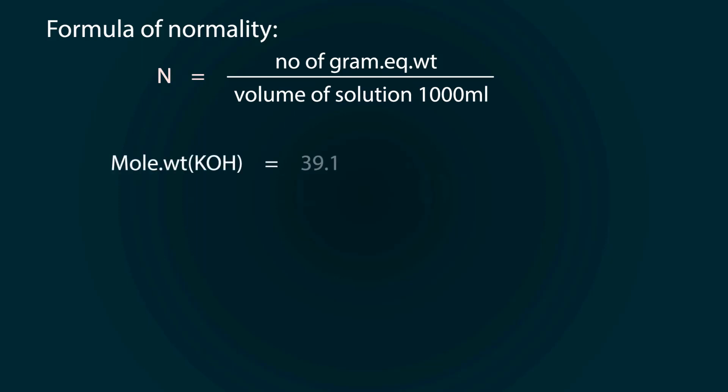Let's do some calculations. First of all, we have to find out the normality. So, normality N equals number of gram equivalent weight divided by volume of solution which is 1000 milliliters. The molecular weight will be 39.1 for K plus 16.0 for O plus 1.01 for H. So molecular weight is 56.11 grams per mole.